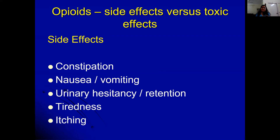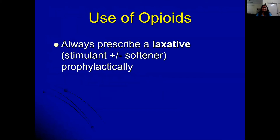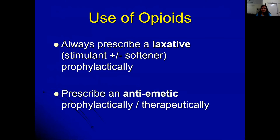Constipation persists as long as opioids are continued. Other less common side effects include urinary hesitancy, tiredness, and itching. Whenever opioids are prescribed, always co-prescribe a stimulant laxative — the drug of choice is bisacodyl. A softener may be added if stools are very hard. For nausea prophylaxis in the initial weeks of opioid initiation, antiemetics like metoclopramide or haloperidol are commonly prescribed.